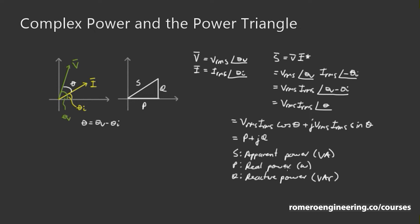You might wonder why we have three types of power. The significance is that S, the apparent power, gives us an indication of how much equipment is going to be heated. Because of that, most equipment in power systems — like transformers, transmission lines, and generators — is rated in apparent power. For example, a transformer might have a rating of 2 MVA, or 2 megavolt-amperes, because that indicates how much heating the transformer can handle.